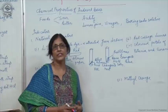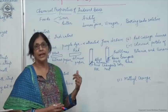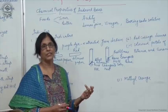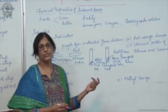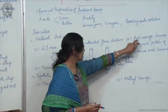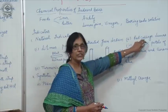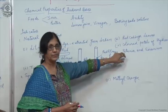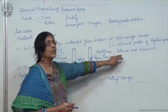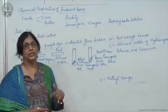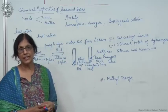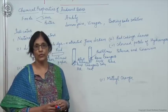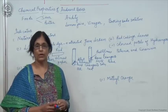Some more natural indicators can be prepared from red cabbage leaves or coloured petals of certain plants like hydrangea, geranium, and petunia. The second type of indicators are synthetic indicators. These are phenolphthalein and methyl orange.